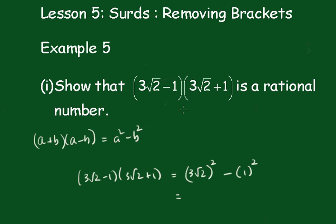There's a name for this, these are the conjugates of each other. They're the same numbers but just the sign changes. So (3√2)² is 3√2 times 3√2, and 1² is just 1.